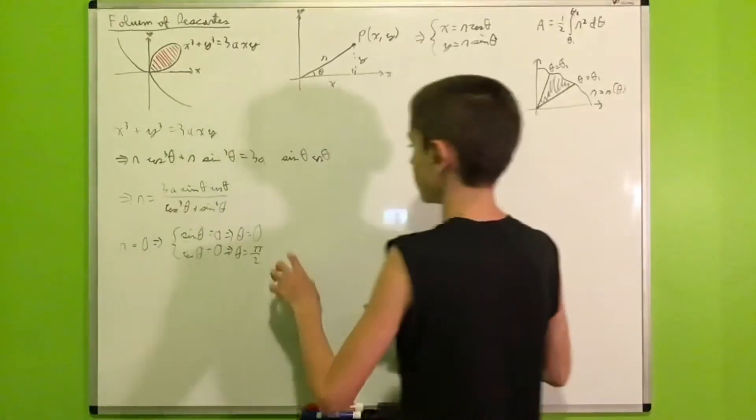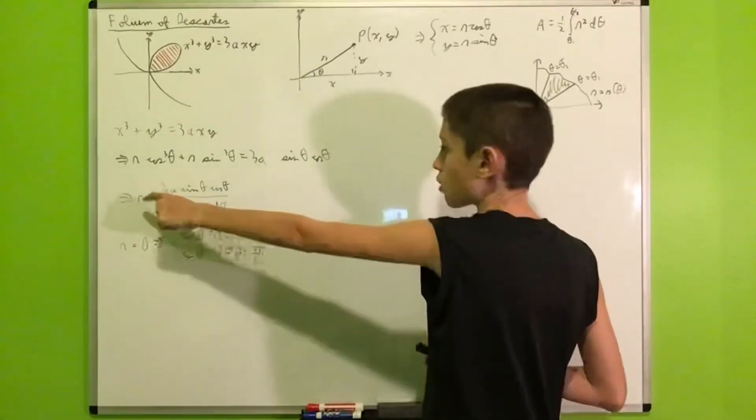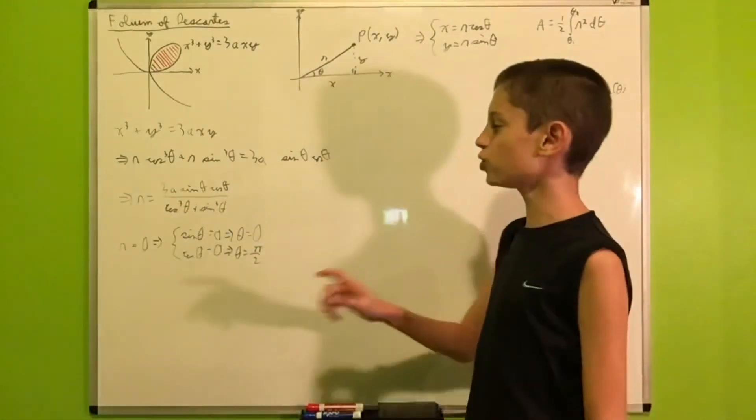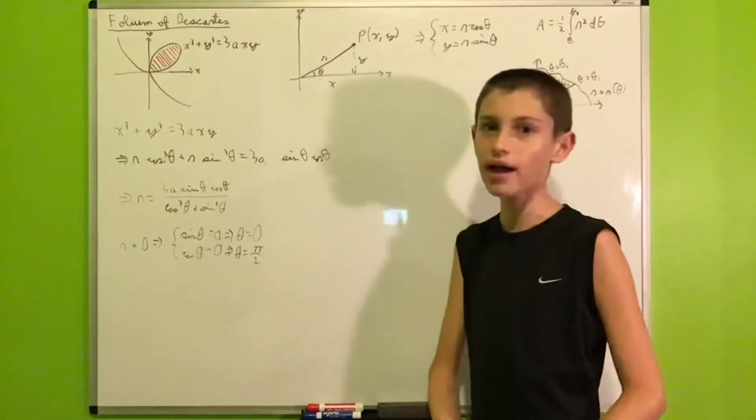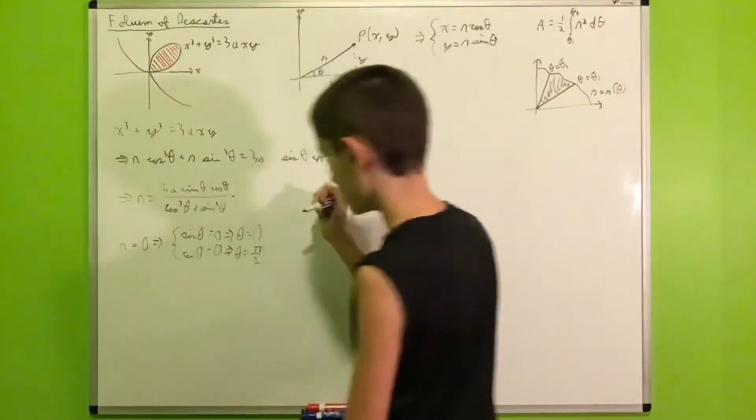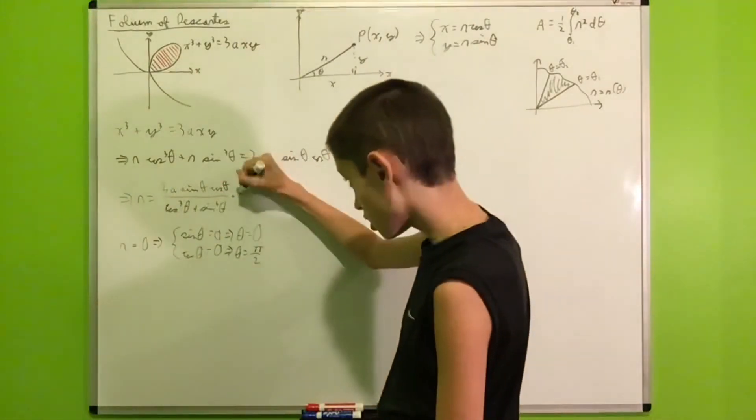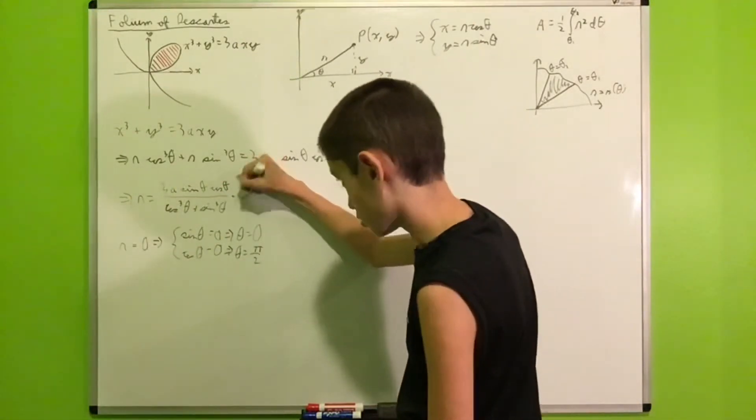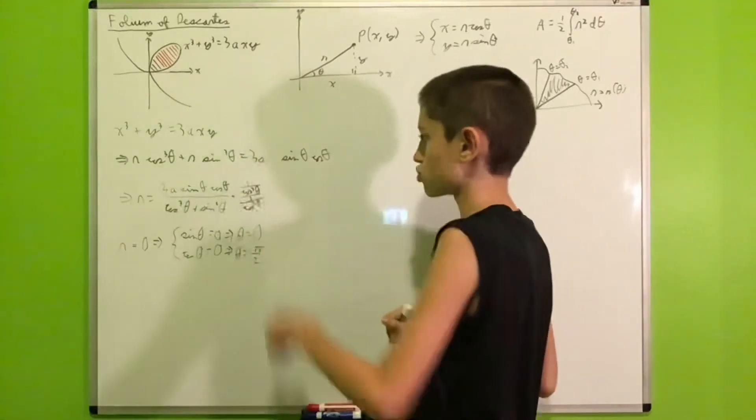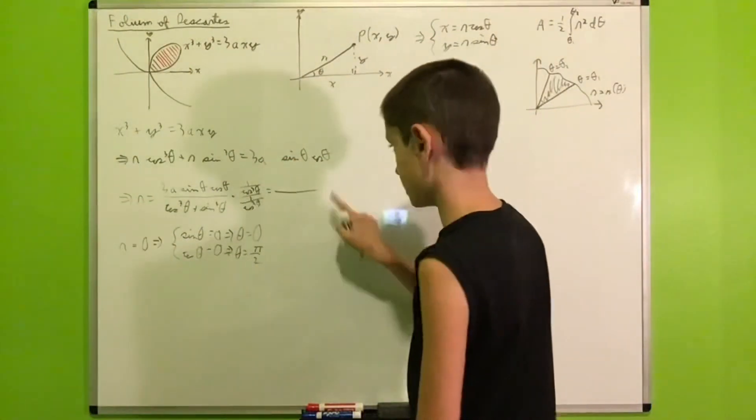So, now we have our two bounds of integration, and we have our formula in terms of R. So, we are ready to integrate. But, before we do that, I would like to simplify our formula for R a tiny little bit, by dividing the numerator and denominator in the denominator by cosine cubed theta. So, in other words, multiply this fraction by 1 over cosine cubed over 1 over cosine cubed.